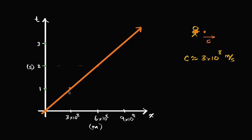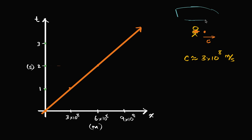We're getting a little bit more comfortable with my little diagram here — time on the vertical axis and my position on the horizontal axis. But now let's introduce another character who can define their own frame of reference. Right at time equals zero, a spaceship passes me by.